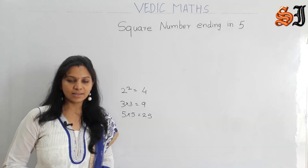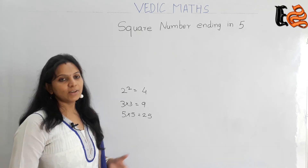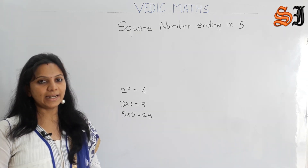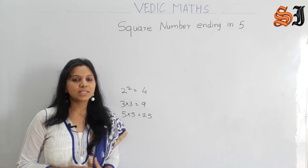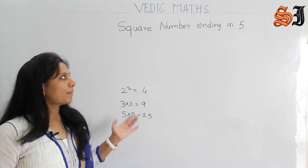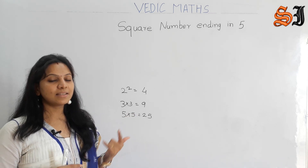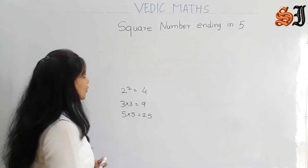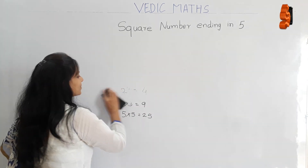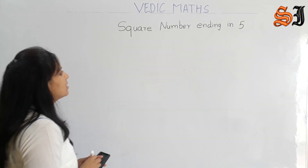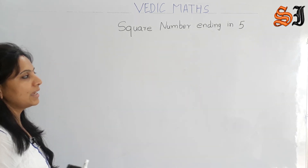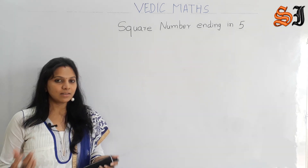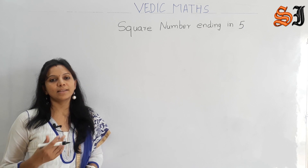From 1 to 9, you have already learnt this because you know the tables. And 11 to 20, you have learnt this as well. So this square is easy without multiplication. Now we start with square numbers ending in 5 — both the specific method and the general method. First we move on to the specific method.